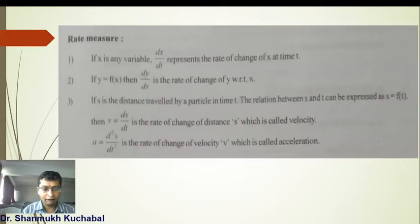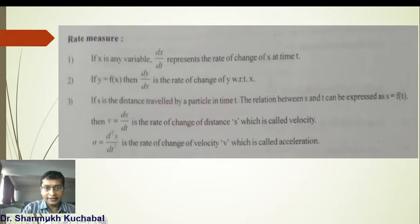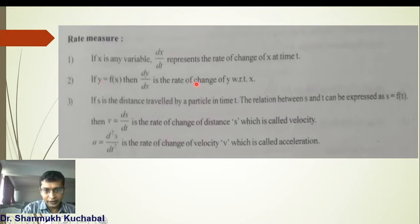So let us define the basic terminologies. If x is a variable, then dx upon dt represents the rate of change of x with respect to the time t. Here x is a dependent variable and t is an independent variable. Then if we differentiate y with respect to x, we get dy by dx, which is the rate of change of y with respect to x.